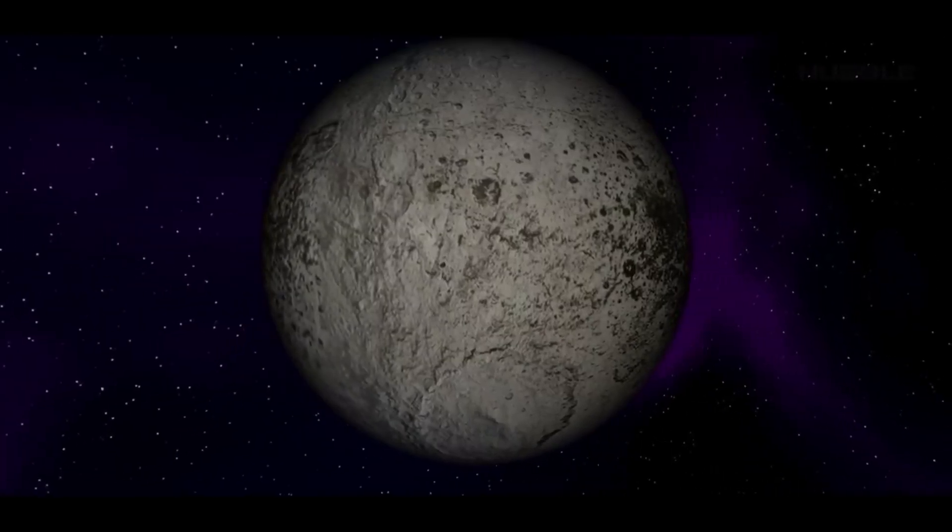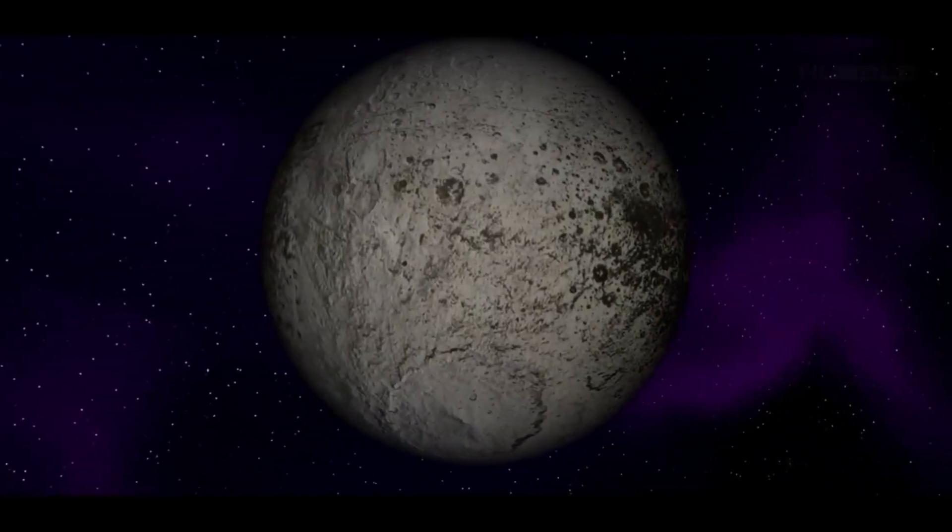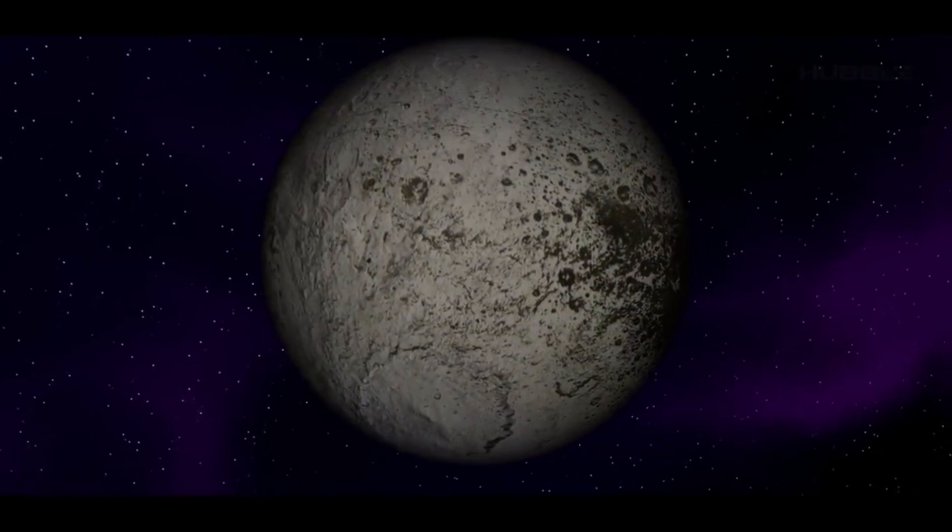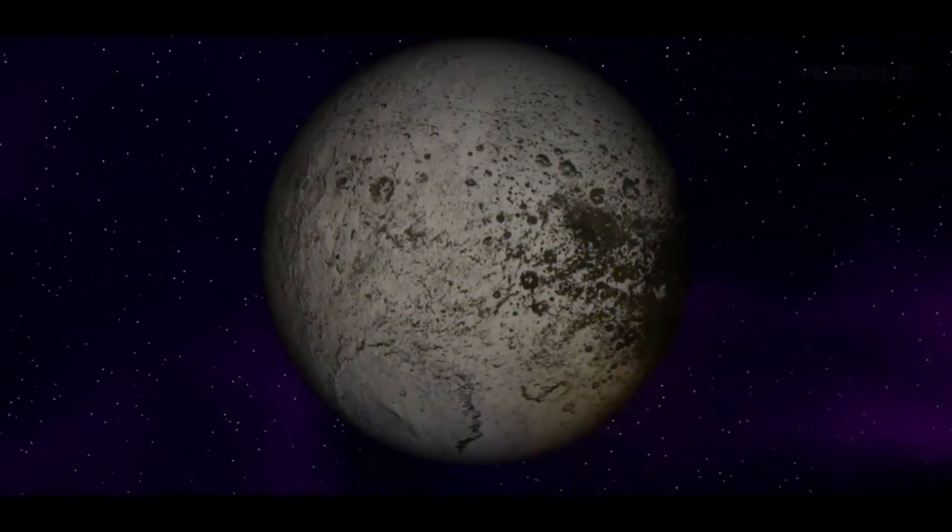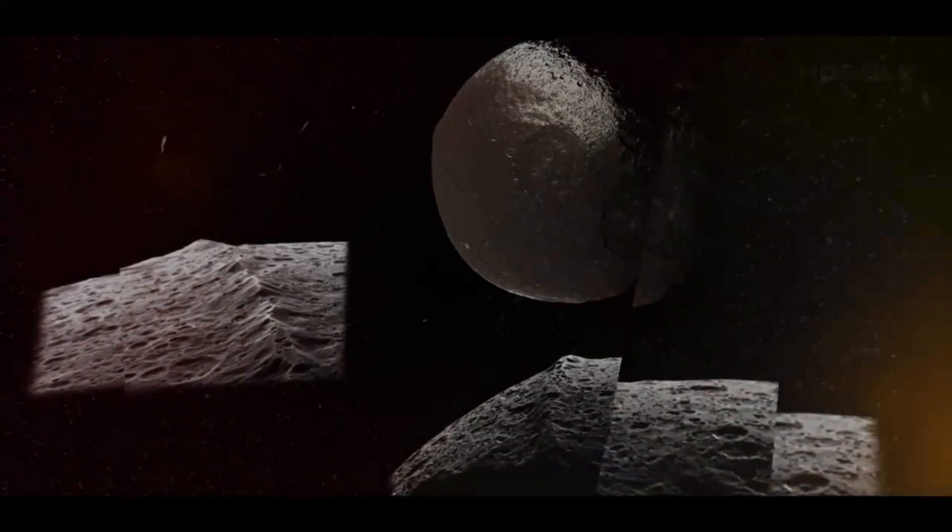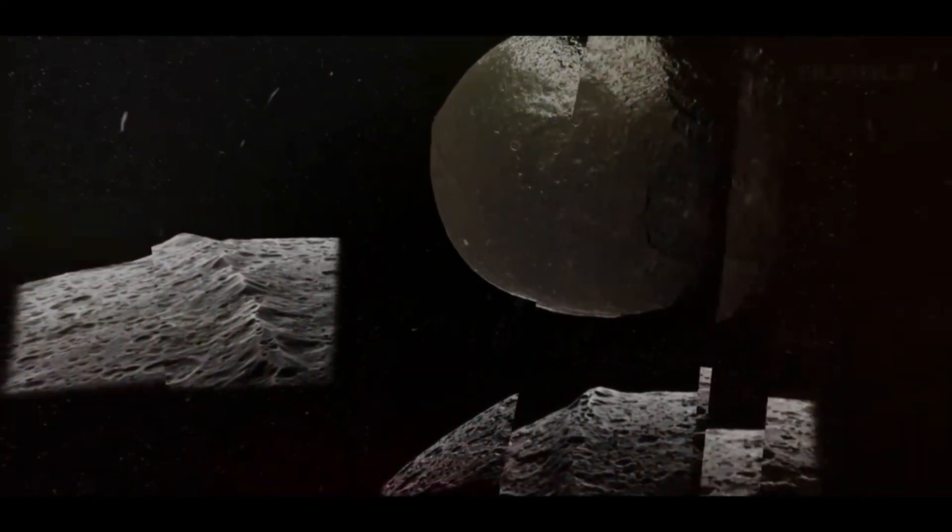There is another theory that says that Iapetus absorbed one of Saturn's rings billions of years ago. The mountain range is a cluster of elements from that ring.